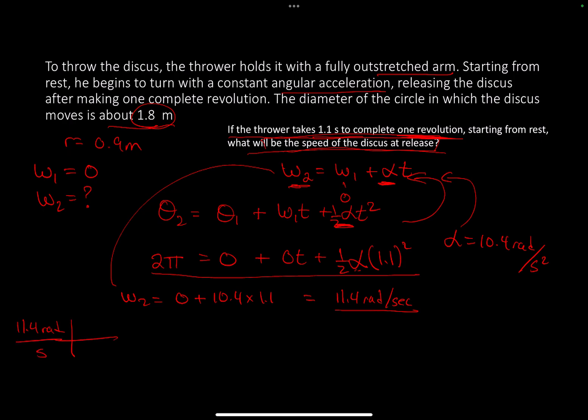Since the discus thrower is moving in a circle, there are 2 pi radians in one revolution.